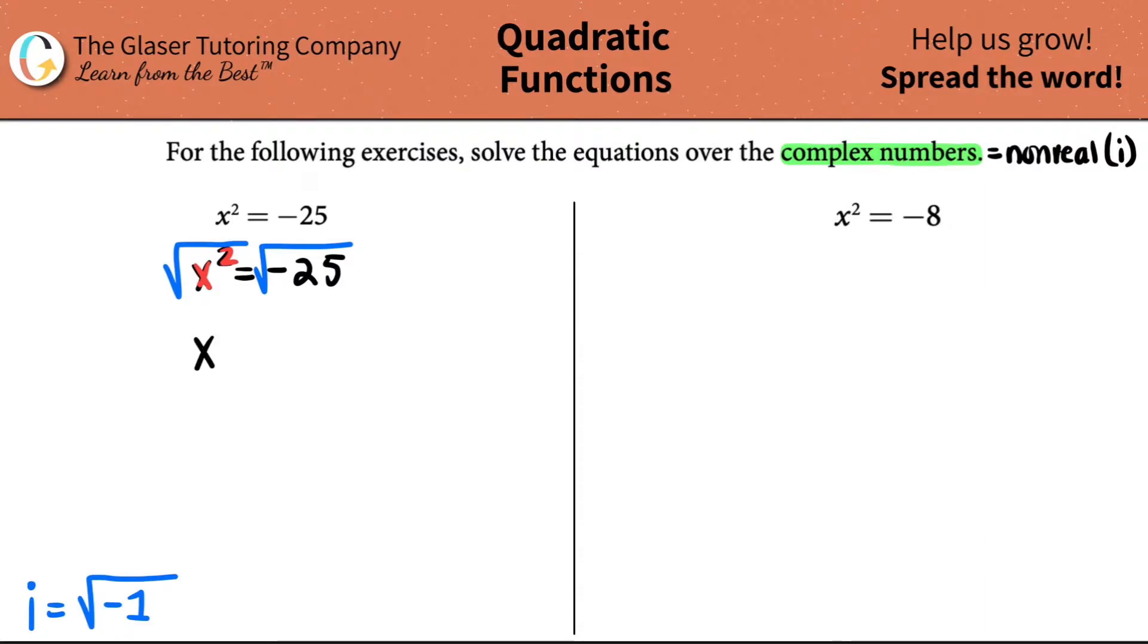And now you see there's a problem here. X, because the square root and the square, they cancel each other. They're opposites. So I just get X would equal the square root of negative 25.